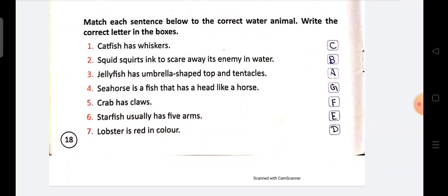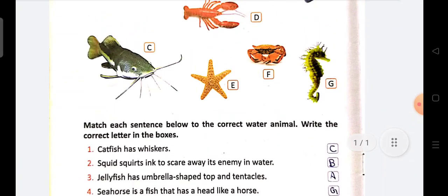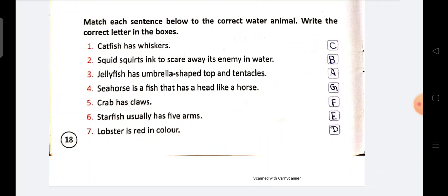Lobster. Lobster is red in color. Iske speciality hai. Lobster kaha hai. Point number D. Lobster is red in color. So students please learn these points. Thank you and have a nice day.